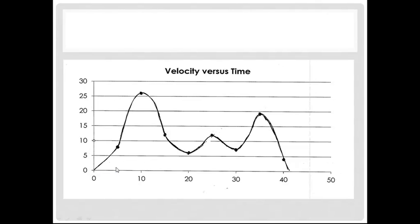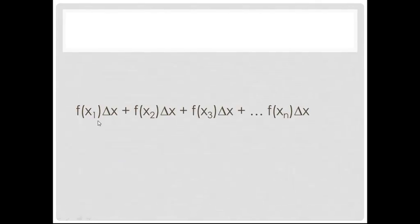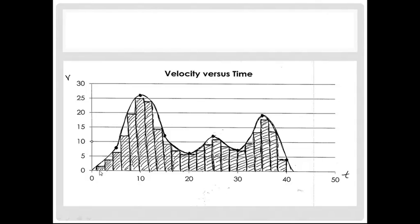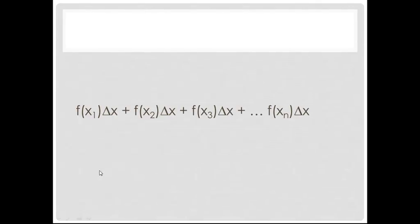So at the first point, 2 seconds in, it's going to be delta x, 2 seconds, times whatever the height is at that point. And then 4 seconds in, 2 more seconds in, whatever the height is at that point. And then 2 more seconds in, whatever the height is at this time.